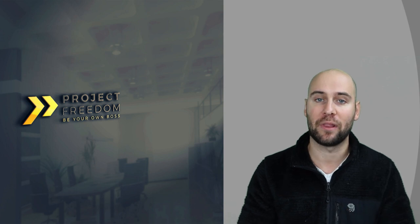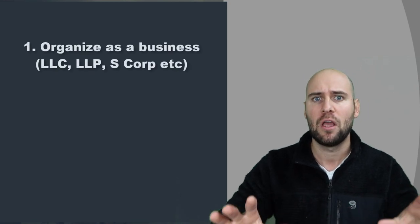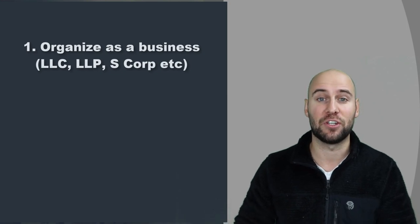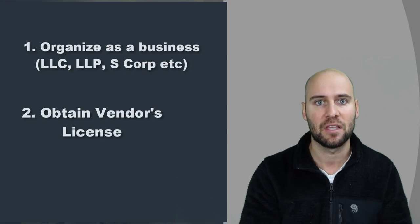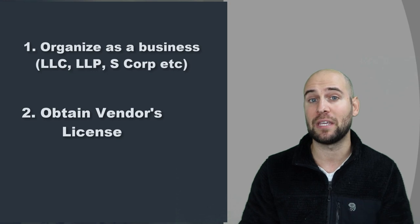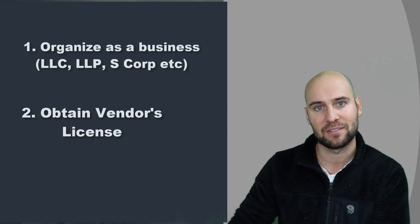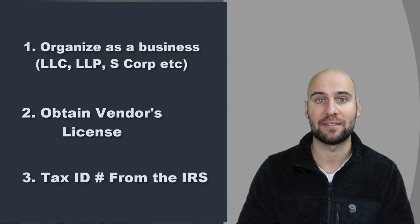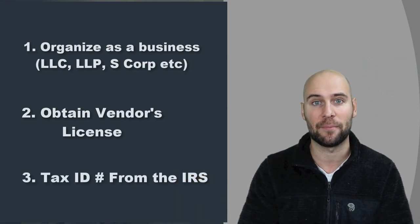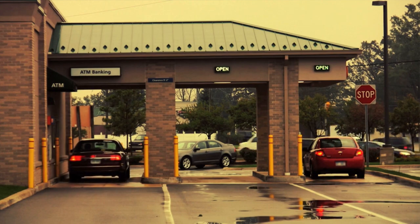As retailers in this business model, our goal is to make as many relationships with major brands and distributors as possible so we can fill our Amazon inventory with products purchased at wholesale price. To get started building these relationships, first and foremost you need to organize as a business — get an LLC or S-corp, whatever way you decide. Next, you need a vendor's license, also known as a retailer's permit or retailer's license depending on your state. This gives you the ability to approach a brand or distributor and buy at wholesale price. You'll also need an EIN number from the IRS — your business's tax ID number.